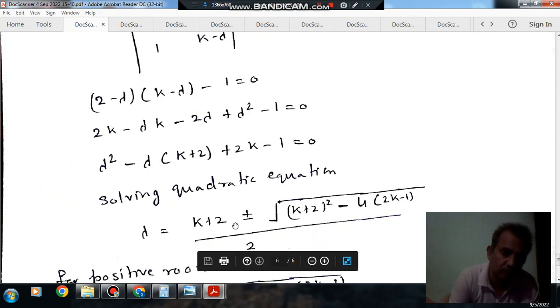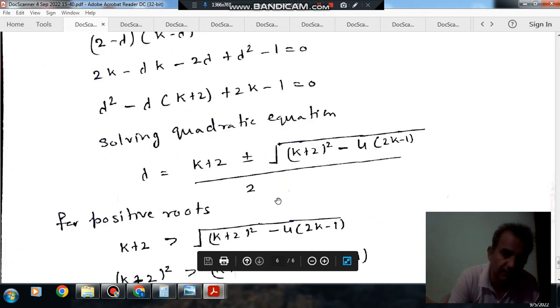Solving this quadratic equation, we have lambda = [K + 2 ± sqrt((K + 2)^2 - 4(2K - 1))] / 2.